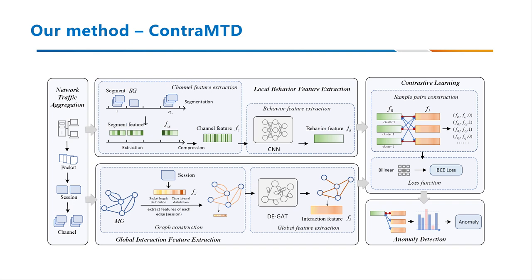Besides, this is the first time that contrastive learning has been applied to unsupervised malicious network traffic detection. We observe that normal behaviors in a network not only exhibit a certain level of stability themselves, but show some inherent correlations with other behaviors they interact with. In contrast, attack behaviors often break these constraints.